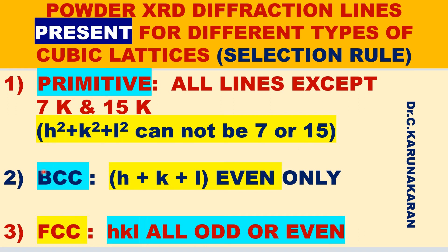For BCC lattice, the allowed reflections follow the selection rule: H + K + L must be even only. Lines satisfying this condition are present in the BCC powder XRD pattern.